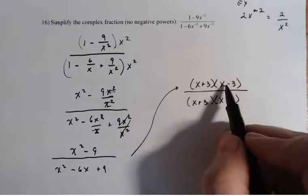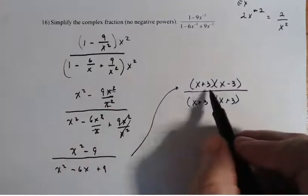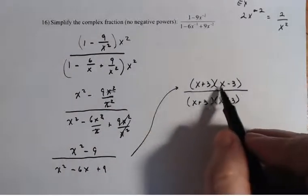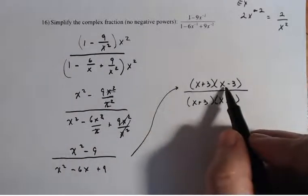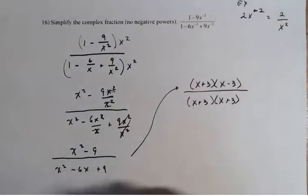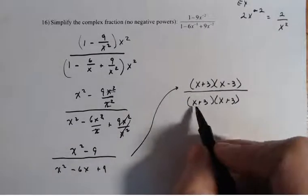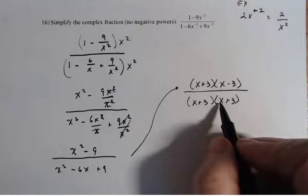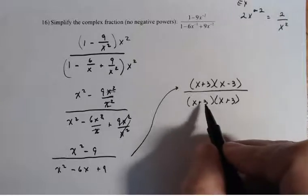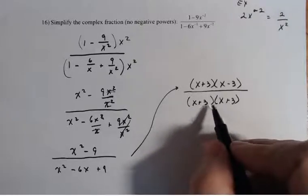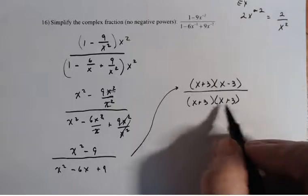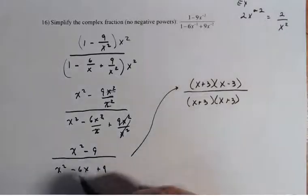Now let's check to make sure. So x times x is x squared. And I have a minus 3x and a plus 3x, so those will cancel. Then 3 times minus 3 is minus 9. And in the denominator, I have x times x, which is x squared. x times 3 plus x times 3 gives me minus 6x. So it should be minus. So that means that each of these shouldn't be plus, it should be minus.